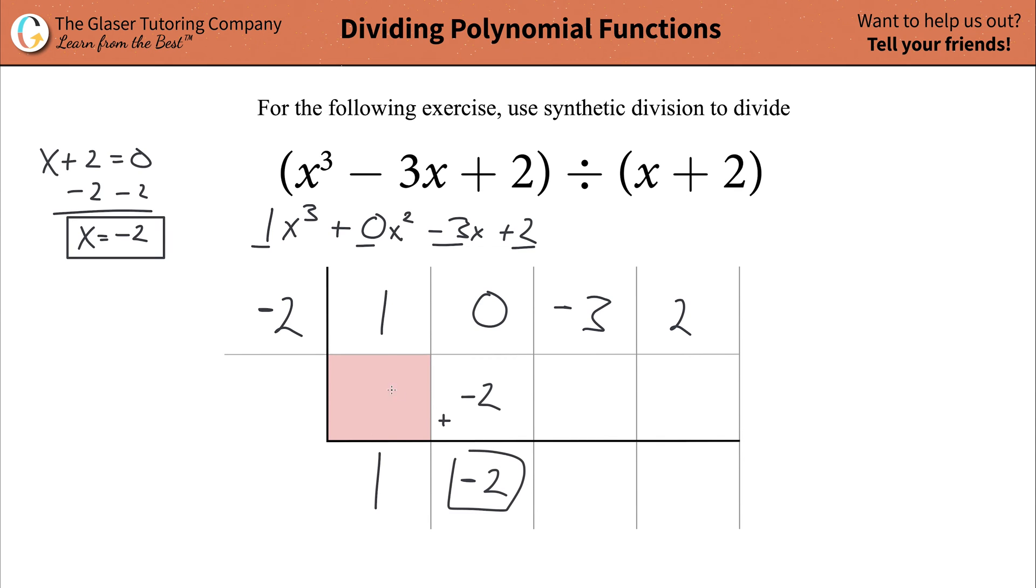Then what you do is you simply add these numbers together. So that's going to be a negative 2. Then you're going to repeat the process. Take this new number, negative 2, multiply it by this outside term of negative 2. And that's going to be a positive 4. So then you're going to add these terms together. Negative 3 and a positive 4 is going to be a positive 1.